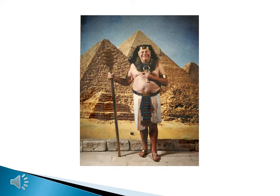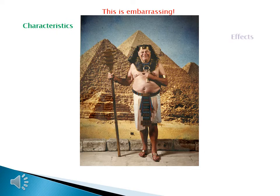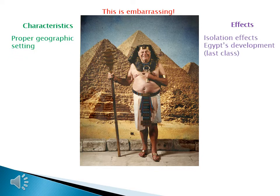Welcome to World History 1 Lecture 2.5 on the Effects of Egyptian Civilization, and here is your typical American tourist. But despite the way Joe Bag of Donuts looks, we might be able to find some characteristics and effects in this picture. Let's check it out. One characteristic is a proper geographic setting. We already learned last class that isolation affects Egypt's development — we are not going to find that in this picture.